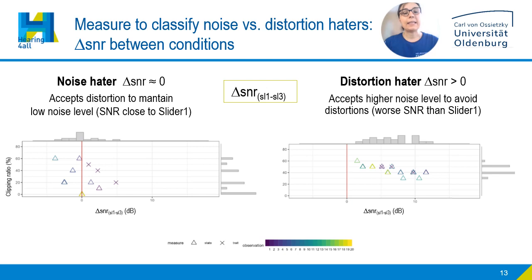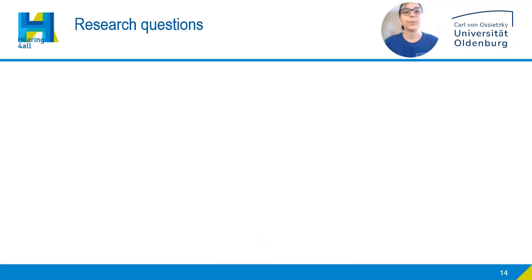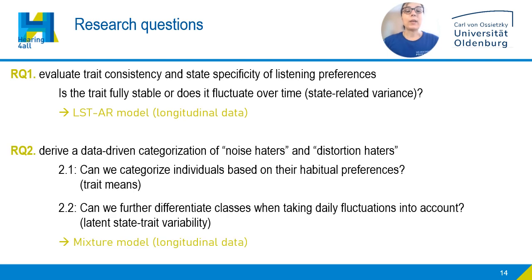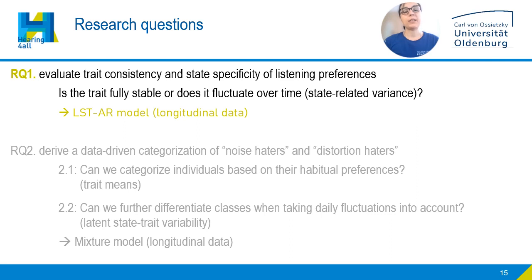Here is an example of participant answers at baseline and longitudinal time points. For our research questions: first, we want to evaluate trait consistency and state specificity of listening preferences — that is, is the trait fully stable or does it fluctuate over time? Then we aim at data-driven categorization of noise haters and distortion haters. But first, let us focus on the first research question.